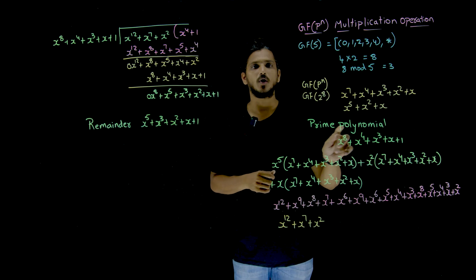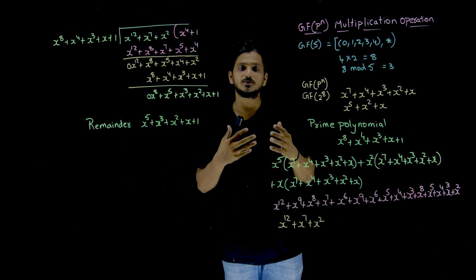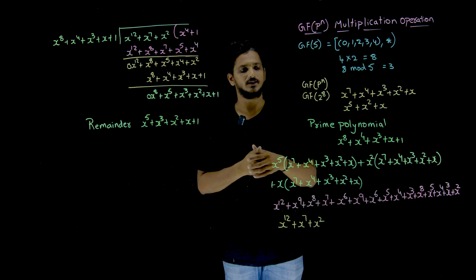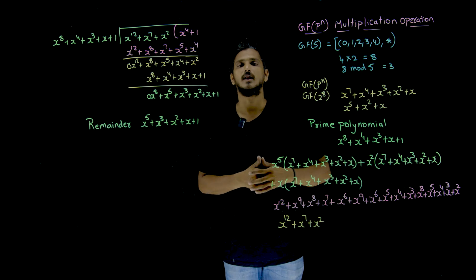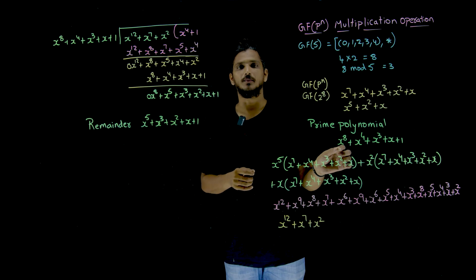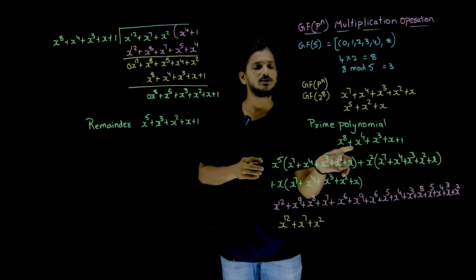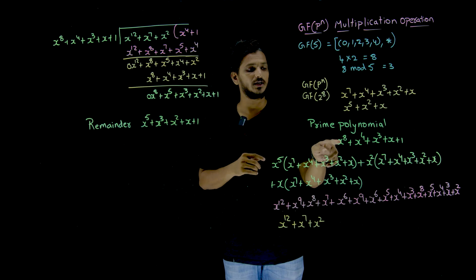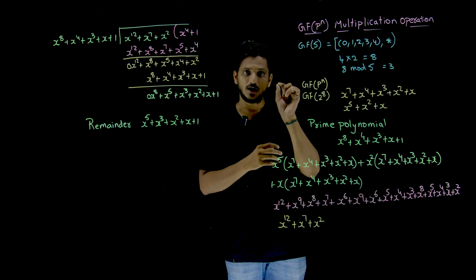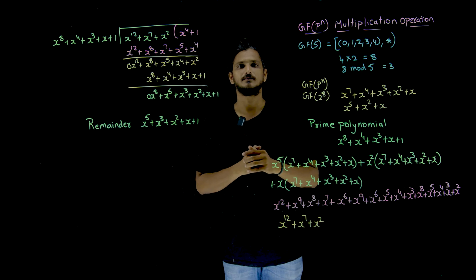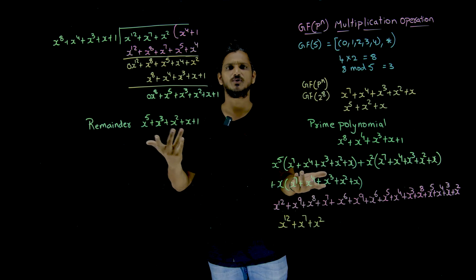This is one of the prime polynomials. What is the meaning of prime polynomial? Just like a prime number — no other number is going to divide it — similarly, a prime polynomial means no other polynomial with this degree is going to divide this polynomial. This is what we call a prime polynomial. In exams, they are going to give you GF of 2 power 8 using a specific prime polynomial. There are multiple prime polynomials with degree x power 8, and you can take any one, or they have to provide the polynomial separately. If you understand this concept, multiplication and division is very, very easy.